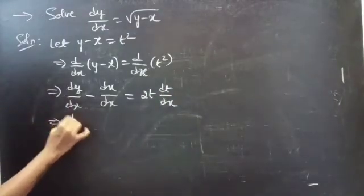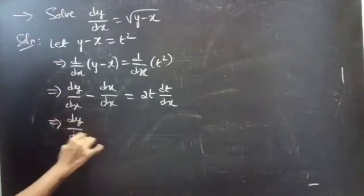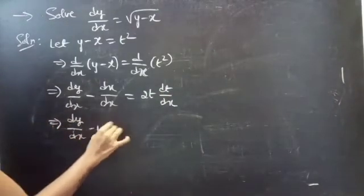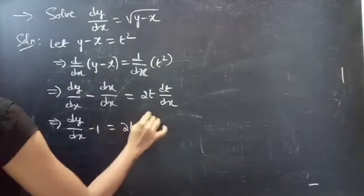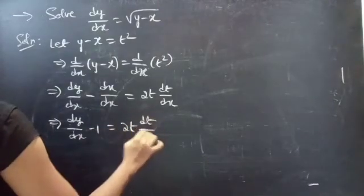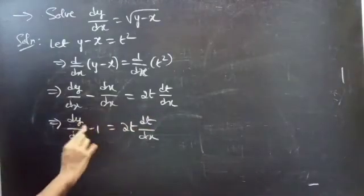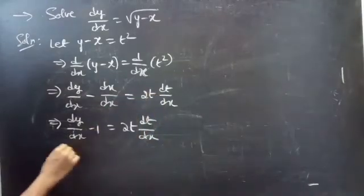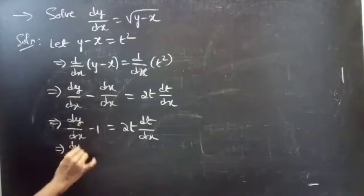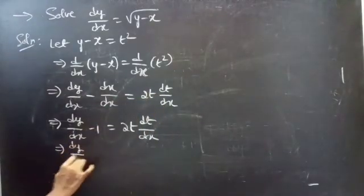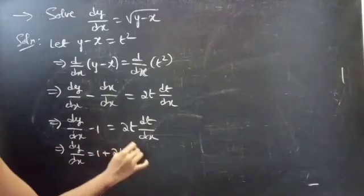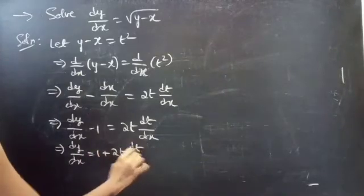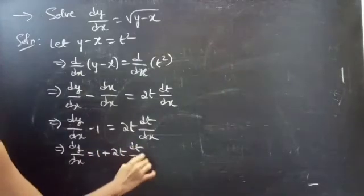This becomes dy/dx minus 1 equals 2t times dt/dx. Now take the minus 1 to the right-hand side and get dy/dx equals 1 plus 2t times dt/dx.